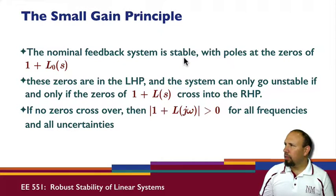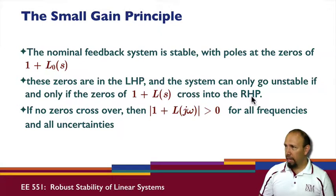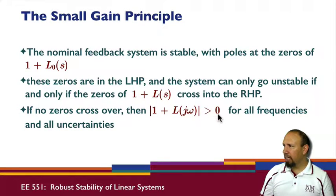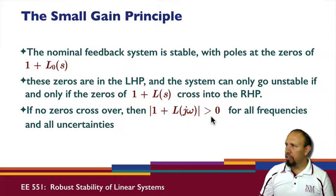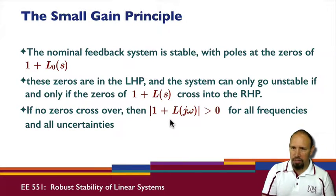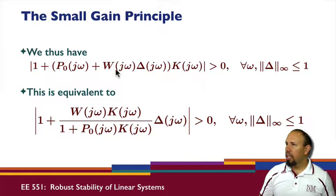The nominal feedback system is stable, with the zeros of 1 plus L in the left half plane. The system can only go unstable if and only if those zeros cross into the right half plane — in particular, they must hit the imaginary axis. So there must be an omega such that 1 plus L at omega must be positive in magnitude for all frequencies and all uncertainties. If these zeros do not cross over, then this quantity must be positive for all frequencies and all uncertainties, so we require that condition.